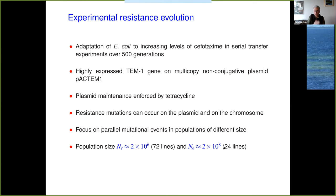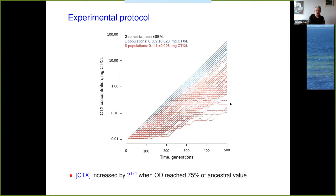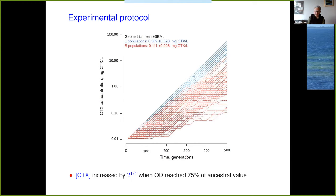Altogether, there were about 100 parallel lines studied. The cefotaxime concentration was increased by a fixed factor whenever the OD reached 75% of the ancestral values, to keep populations at roughly constant selective pressure. In this plot, you see the concentration trajectories of the small populations in red and the large populations in blue. The blue populations are essentially already evolving at the maximal rate, whereas in the small populations there is more variability. The small populations reach lower resistance levels than the large ones, simply because they have access to fewer mutations.